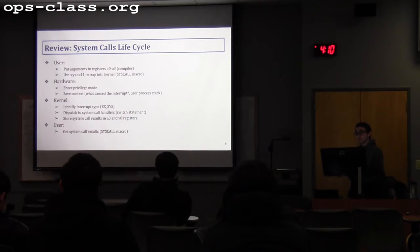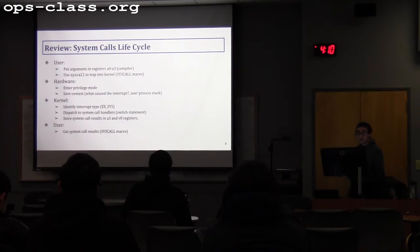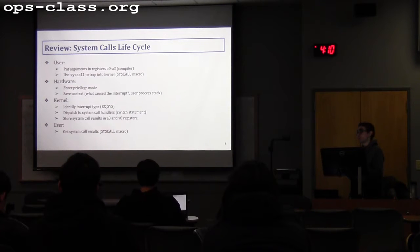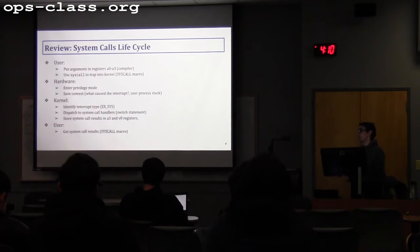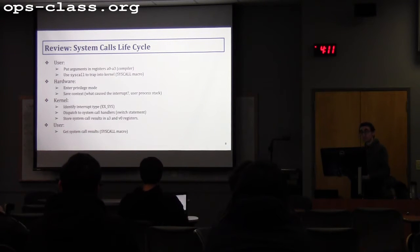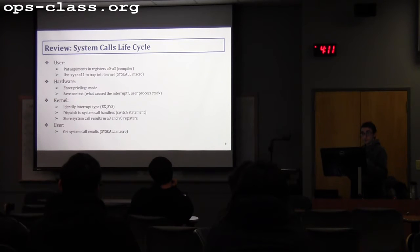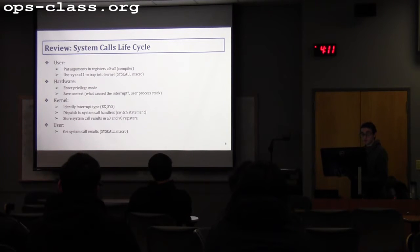We also summarized the system call lifecycle. The user puts arguments into registers A0 through A3 and makes a syscall. The hardware switches to privileged kernel mode and saves the context. The kernel identifies the type of interrupt — system call, hardware interrupt, software interrupt, or timer interrupt. The system call dispatcher identifies which syscall was requested, dispatches and executes it, puts the return value into A0 and V0, and returns these values to the user in user space.